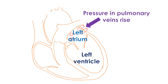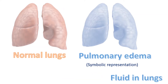A rise in left atrial pressure is in turn reflected onto the pulmonary veins, which bring oxygenated blood to the left atrium from the lungs. Increase in pressure in the pulmonary veins increases the pressure in the small blood vessels of the lungs known as capillaries. The lung capillaries line the tiny air spaces of the lungs known as alveoli, where carbon dioxide is removed from the blood and oxygen taken up.